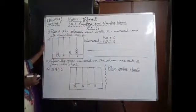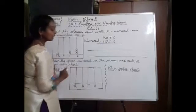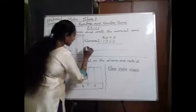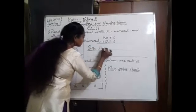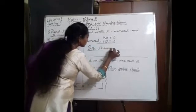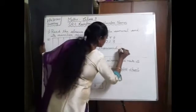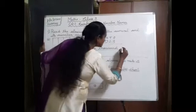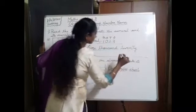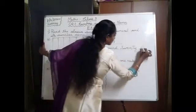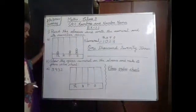Now we are going to write the number name for this numeral. 1,023 — one thousand and twenty-three.